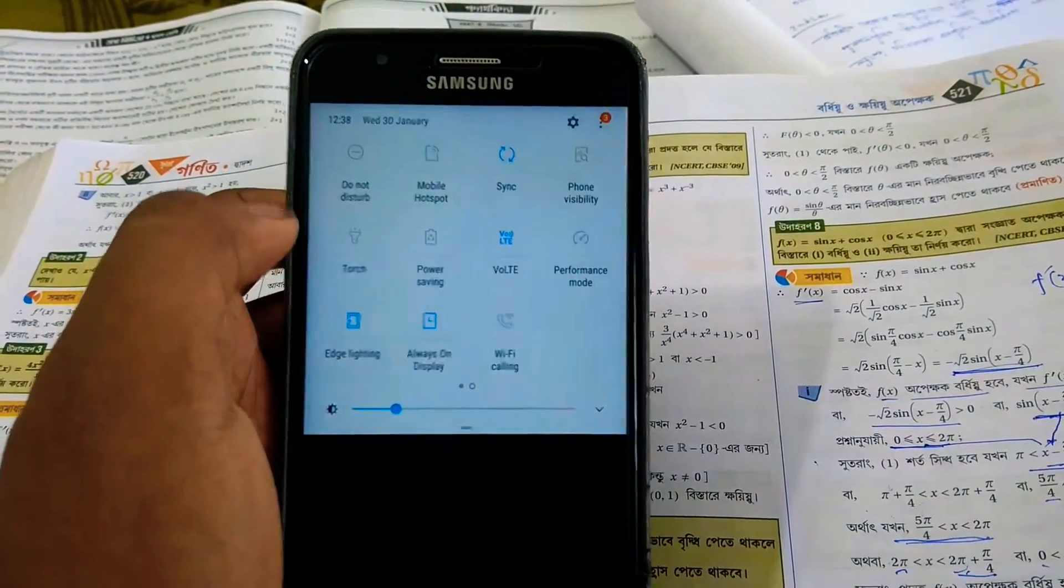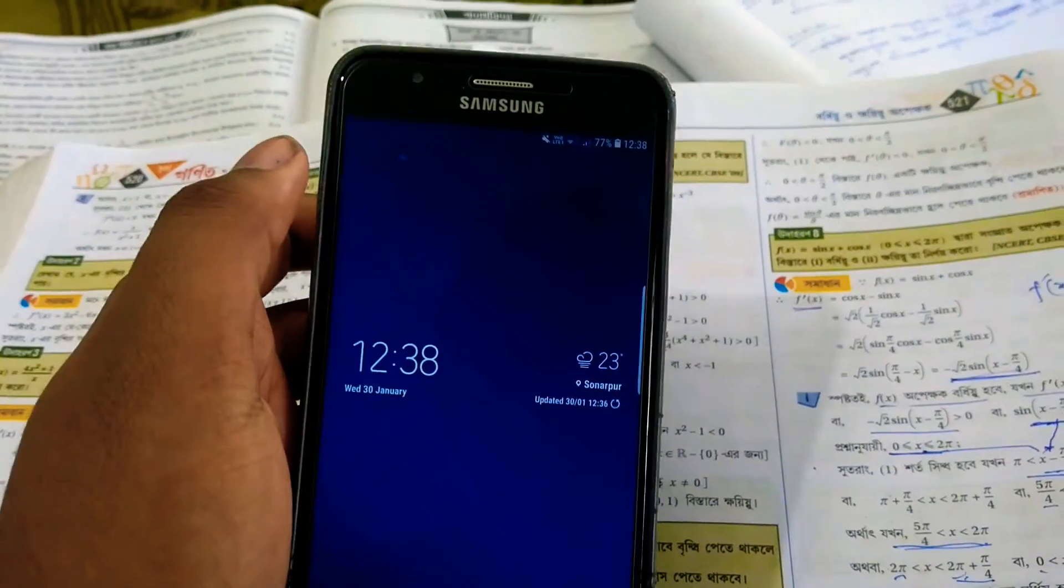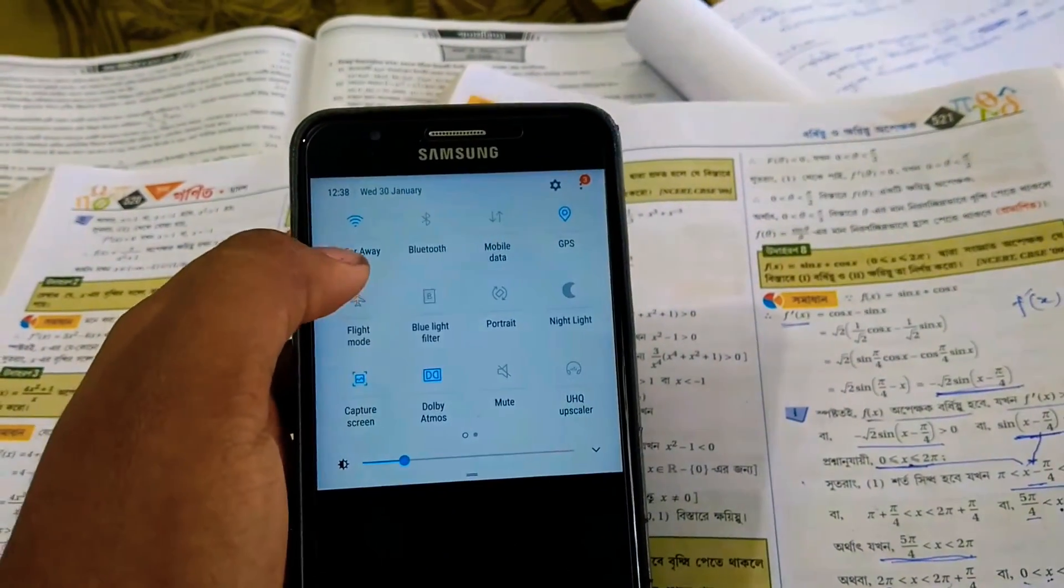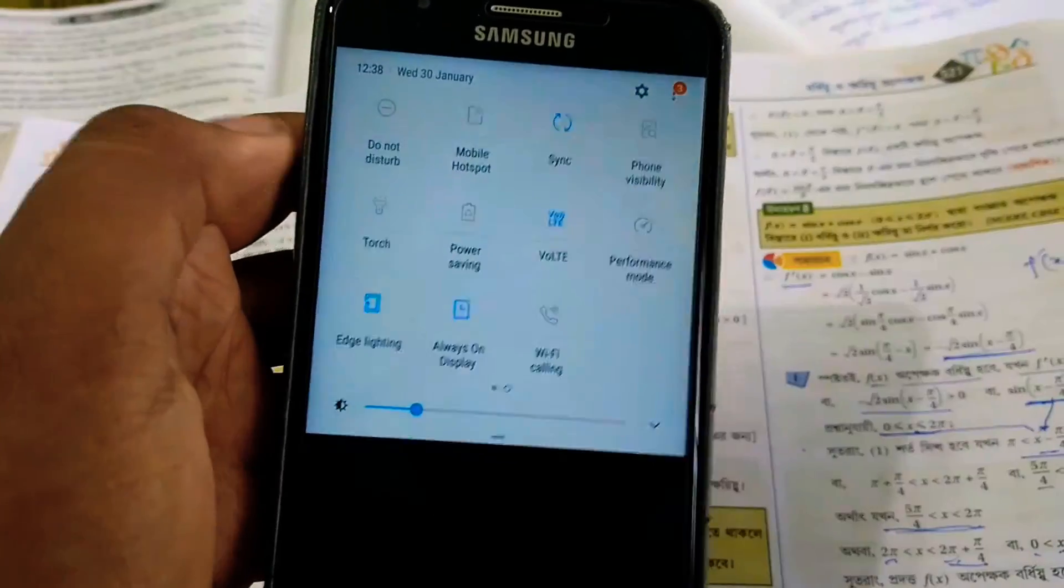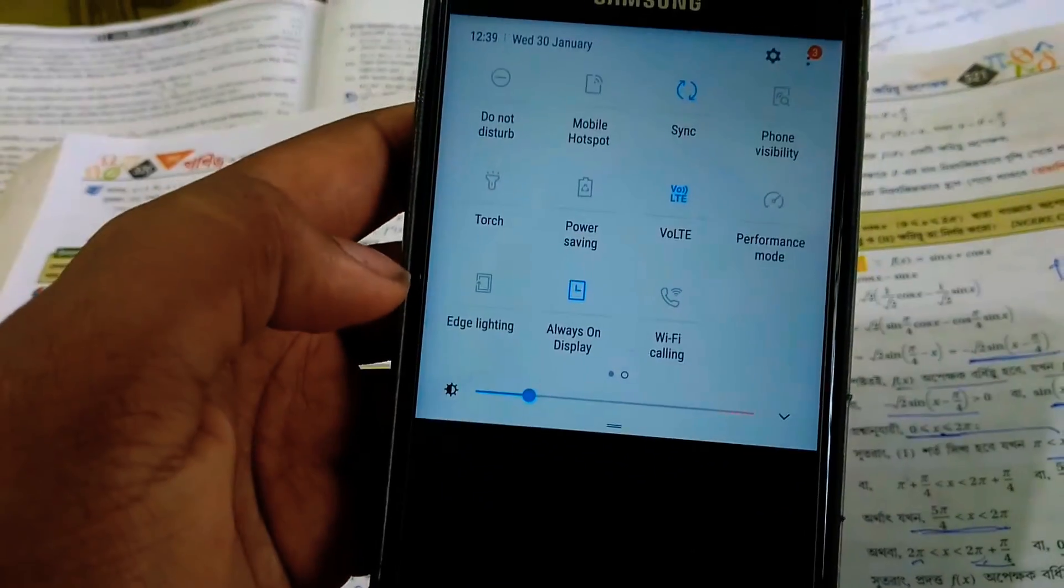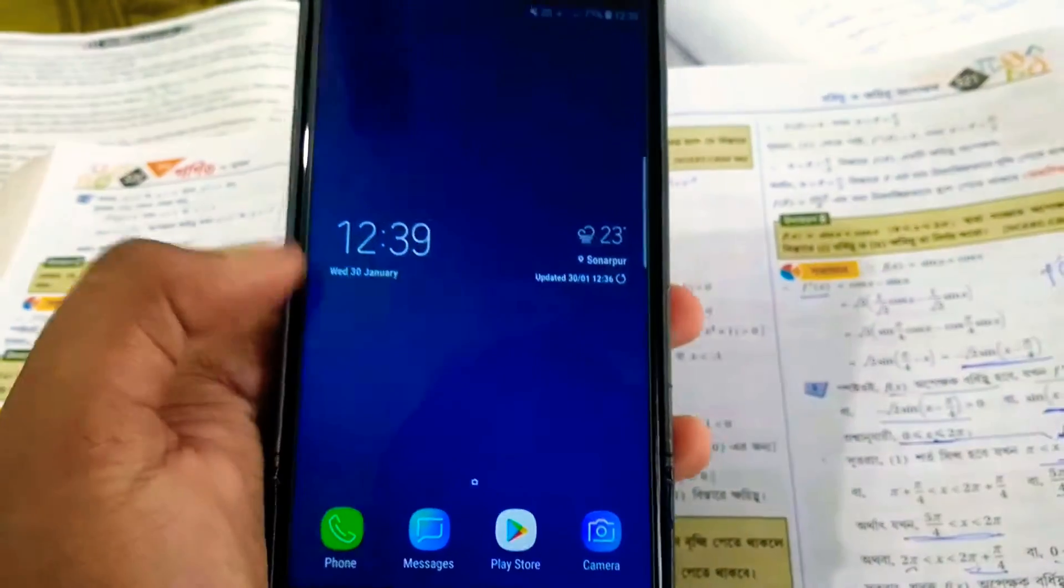On the next page there is VoLTE—it is VoLTE enabled ROM, so you can get the VoLTE on both sims but not at the same time. There is also edge lighting, which I don't use, so I'll turn it off. There is also always-on display standard, but it doesn't work.